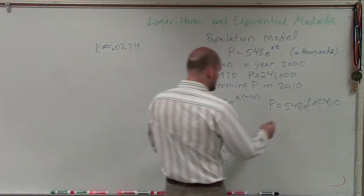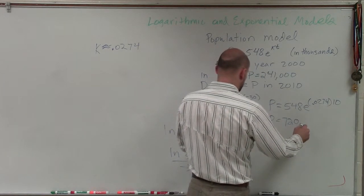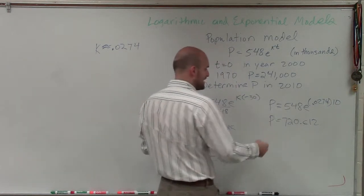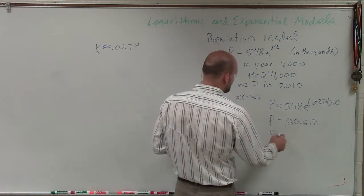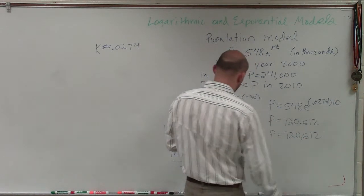And therefore, the population in thousands is going to be 720,612. Now, obviously, if I want to rewrite this not in thousands, the population would be 720,612 people.